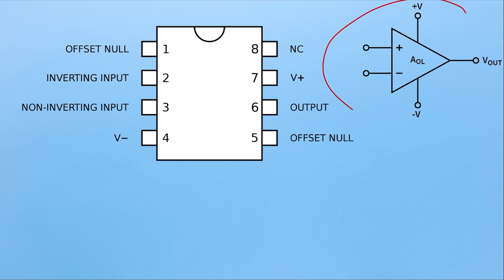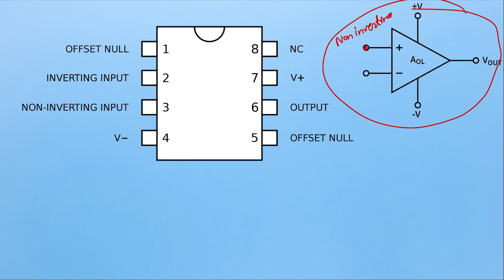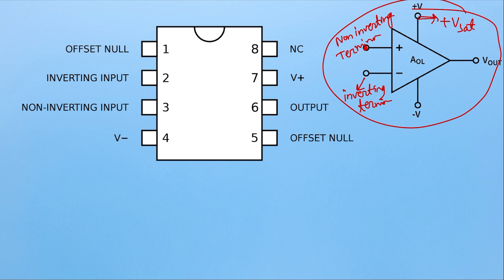This is the symbol of an op amp. This terminal we call the non-inverting terminal. This terminal we call the inverting terminal. This one we call the positive V, or the positive input voltage given to the op amp. This one we call the negative V, or the negative voltage given to the op amp. And this one is the V output.